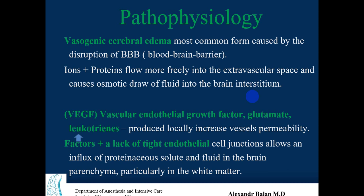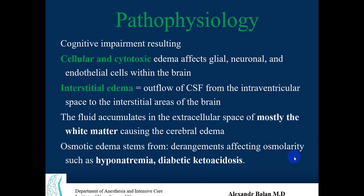Vascular growth factors, glutamate, and leukotrienes produced locally increase vessel permeability. These factors, combined with a lack of tight endothelial cell junctions, lead to a low-resistance flux of proteinaceous solute and fluid into the brain parenchyma, particularly in the white matter, resulting in cognitive impairment.